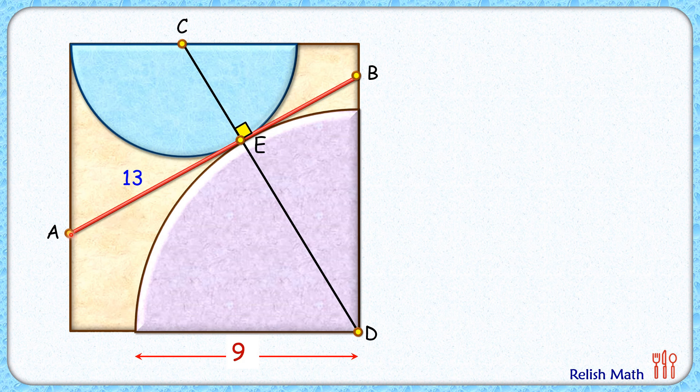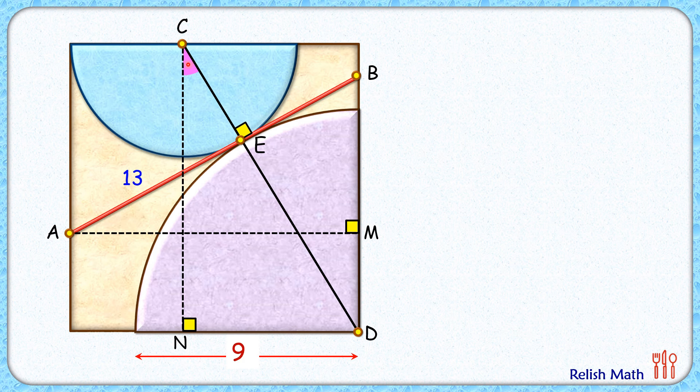For that, from point A we are drawing a line perpendicular, and same way from point C we are drawing a line perpendicular. Now if I'll assume this angle as alpha, this is 90 degrees.